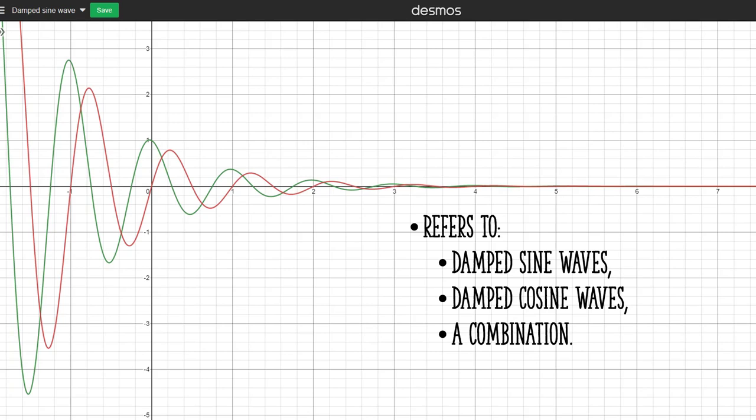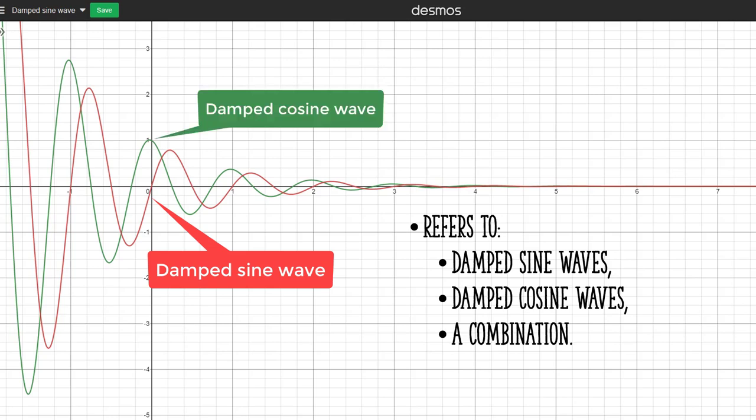The term damped sine wave refers to both damped sine and damped cosine waves. It can also be a function that includes a combination of sine and cosine waves. In this image, the cosine curve has the same shape as the sine curve, it's just shifted half a period. Where the sine wave crosses the y-axis at y equals zero, the cosine wave crosses it at y equals one.